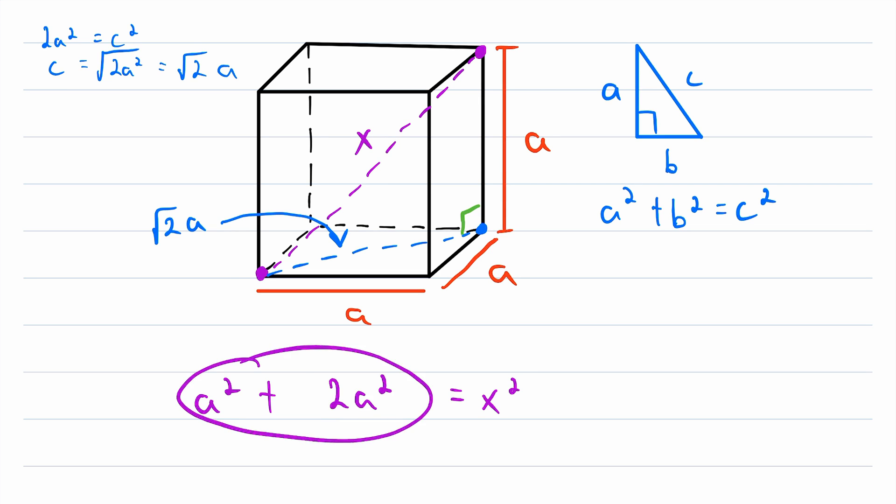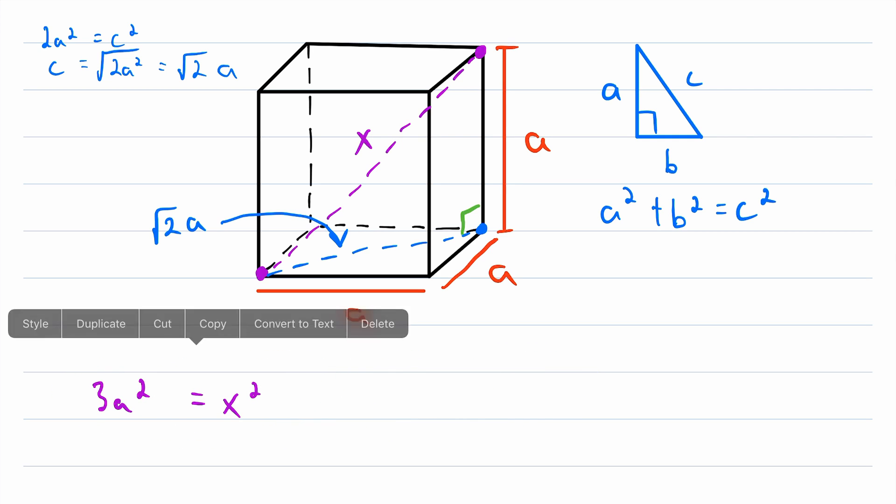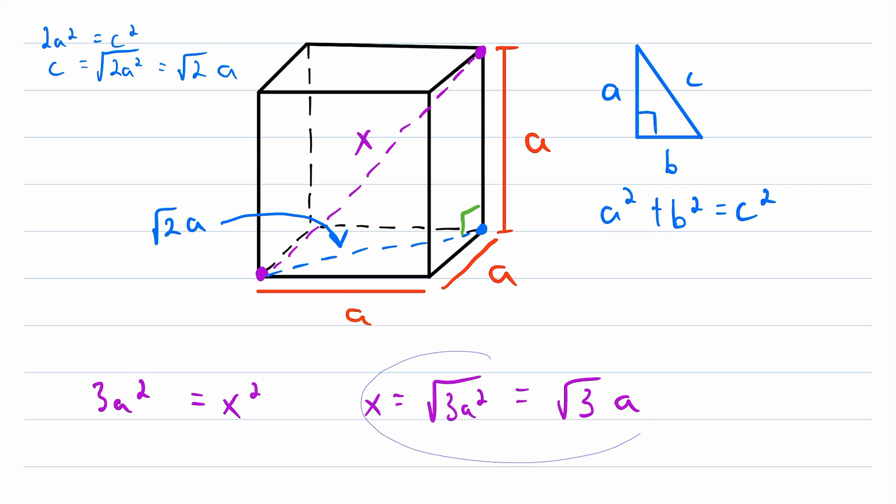Well, then we can add like terms, A squared plus 2A squared, that is just 3A squared. And then, just as before, we'll take the square root of both sides. The square root of x squared is x, and then the square root of 3A squared is left on the other side. Just as before, since we've got A squared under the radical, we can take an A out, and we'll just be left with root 3 multiplied by A. So as you can see, it is a very nice and simple expression.